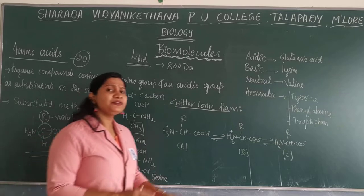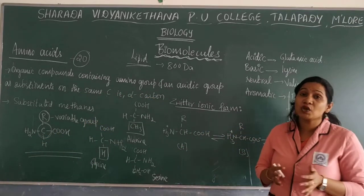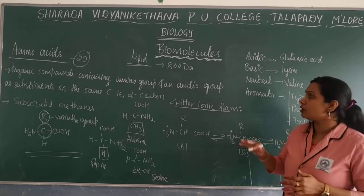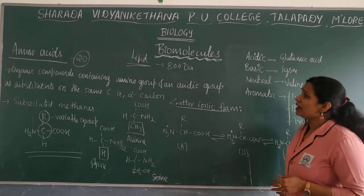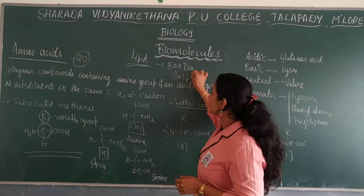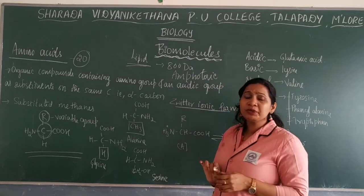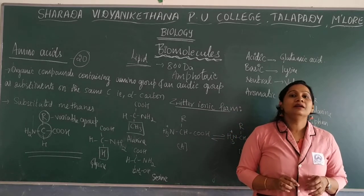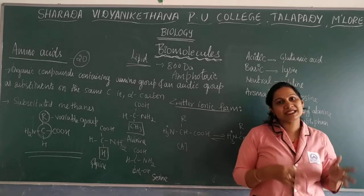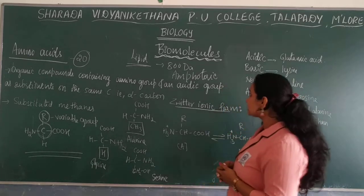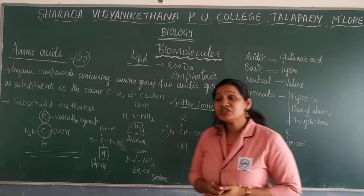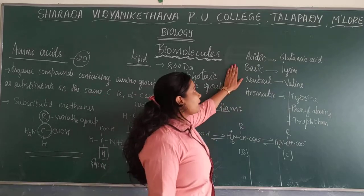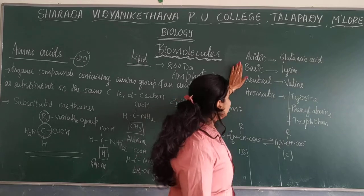The physical property and chemical nature of amino acids depend on the amino as well as the carboxyl group. Amino acids also act as amphoteric substances, meaning they can act as both an acid and a base. Based on the number of carboxyl and amino groups, amino acids are classified into different types.